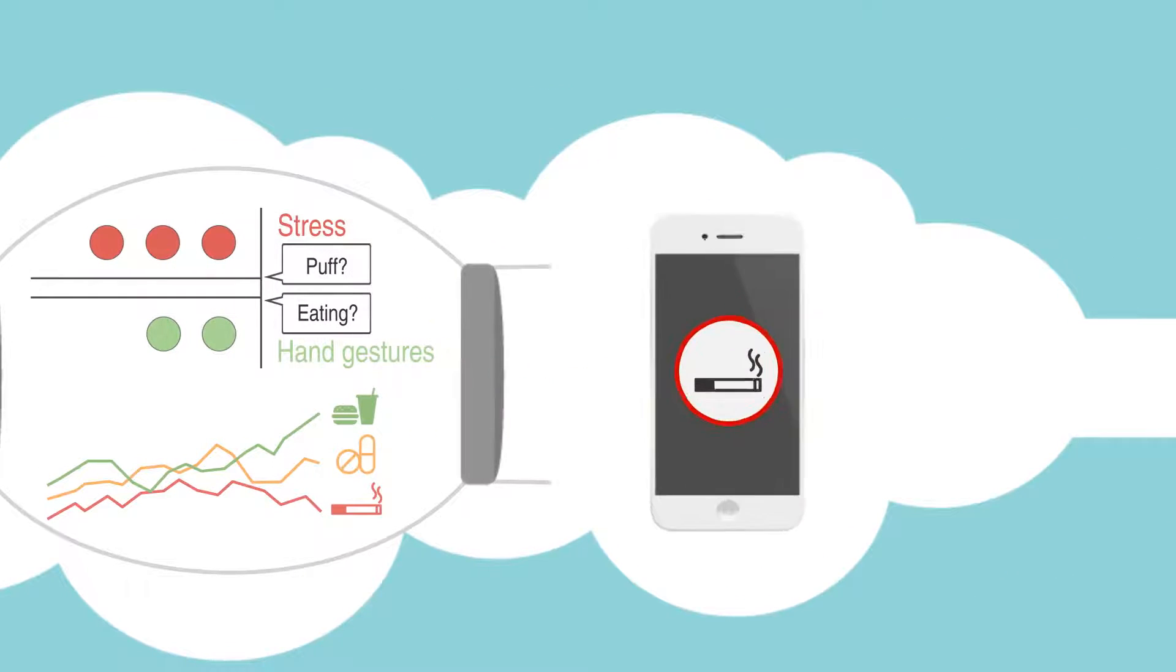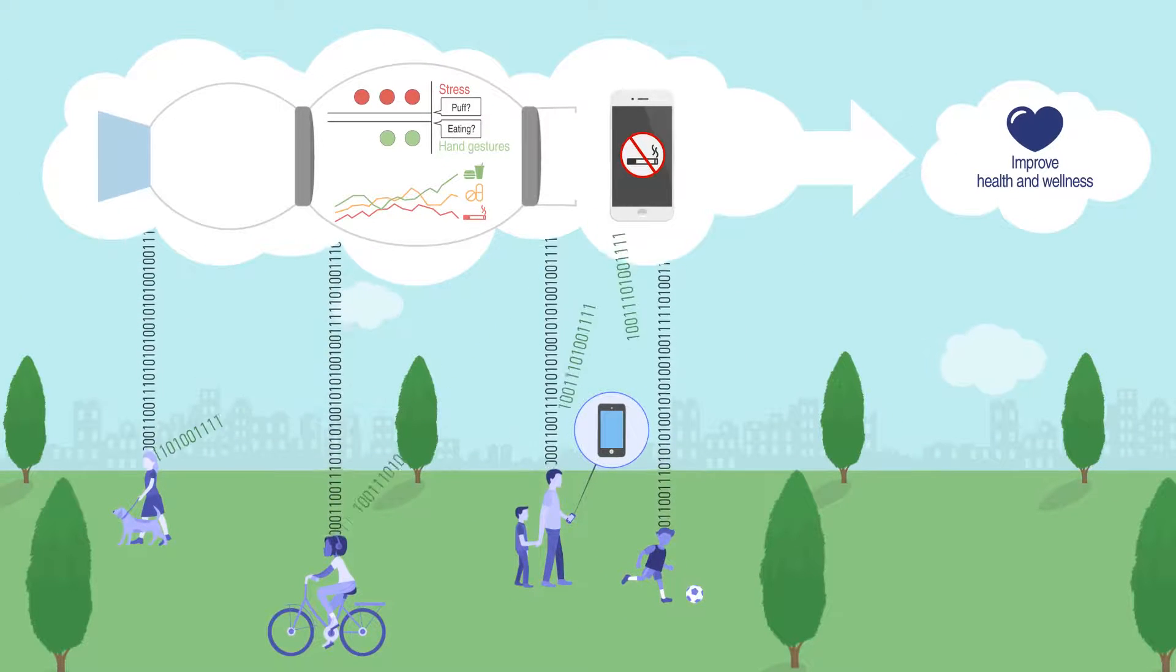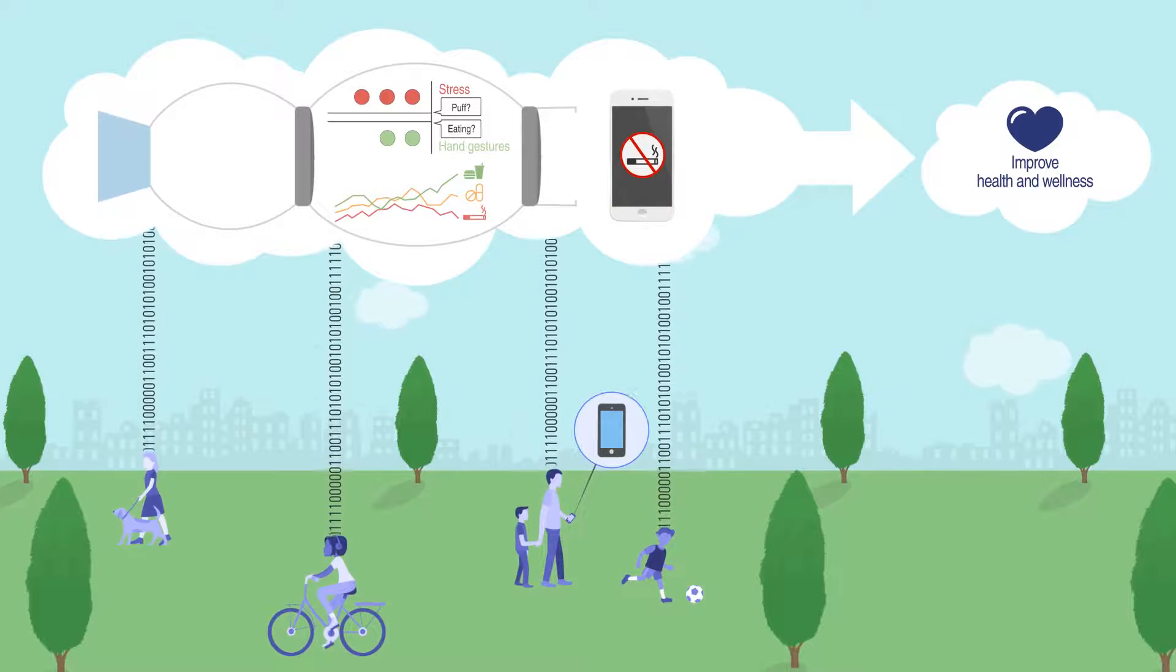MD2K tools detect these activities and then act on them by using the information to send swift interventions. Research is underway to determine the best times to send interventions to minimize their intrusiveness and maximize their effectiveness.